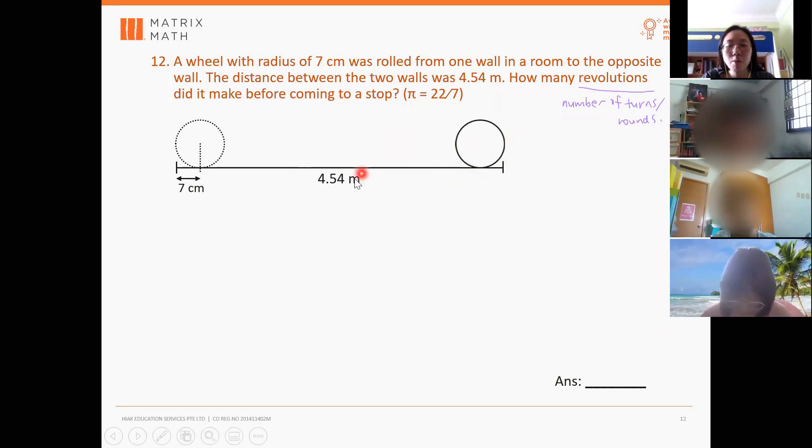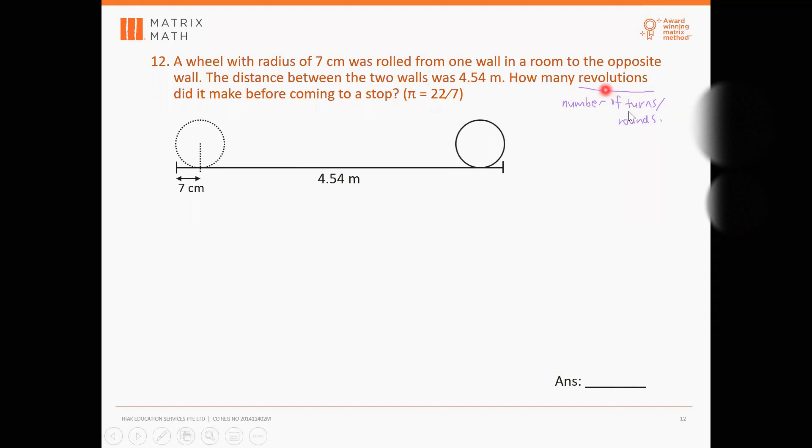Now the distance between two walls was 4.54 meters. So it's given in the question here. So how many revolutions did it make before coming to a stop? So like I mentioned just now, revolutions just means the number of complete turns or complete rounds. Okay, like what Kayleen has asked.